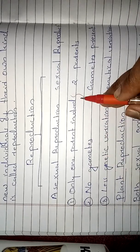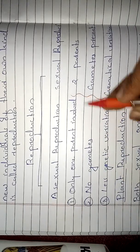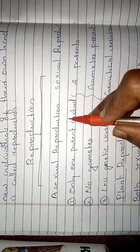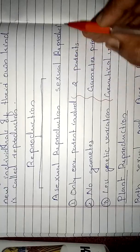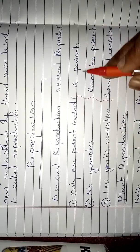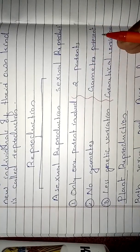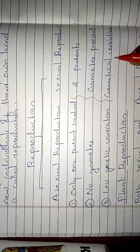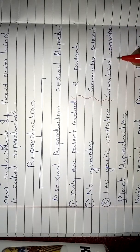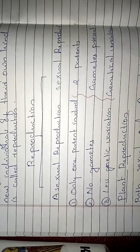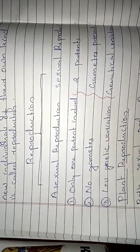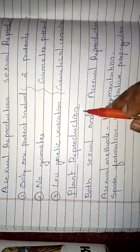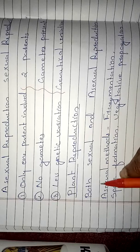To summarize: only one parent is involved in asexual reproduction, there is no gamete production, and there is less genetic variation. Whereas in sexual reproduction, two parents are involved, gamete production occurs, the gametes fuse together, and this leads to improvement in genetics.